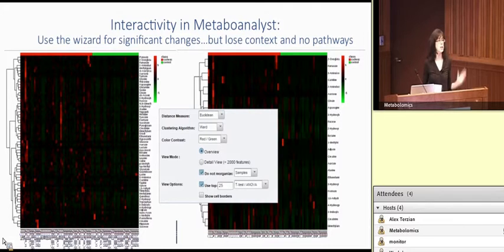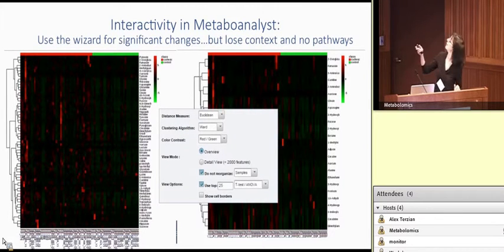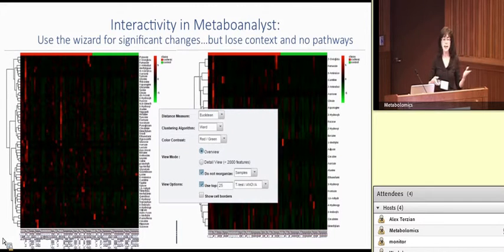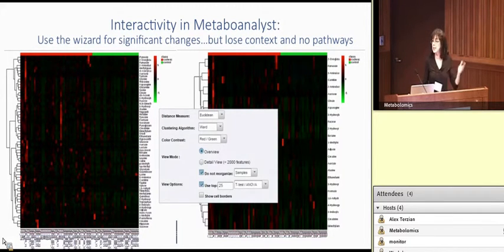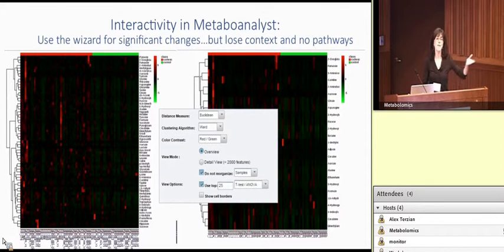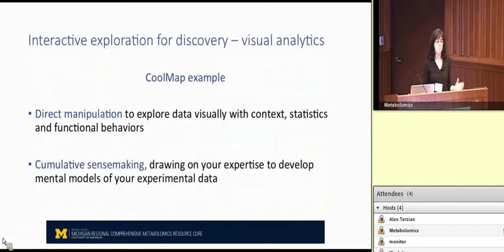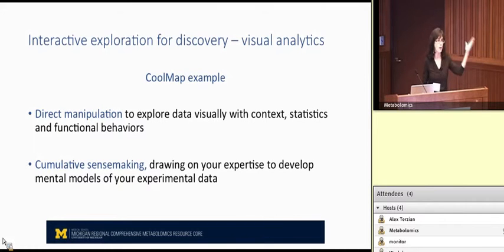Metaboanalyst, as Chuck had showed, gives you interactive heat maps. You can use a wizard and put in the parameters you want — for example, the top 25 significant molecules — and you'll get the resulting graph. That reduces the volume and is really very good for that. The one thing it doesn't do is let you interact directly with the data, and it doesn't give you the context of what was filtered out. Maybe something at position 35 is really interesting to you biologically and you don't see that. CoolMap is based more on the notion of directly manipulating graphics to interact with them, so you can bring your knowledge to bear. That's called visual analytics — a whole field that has developed over the past 10 years especially in biology.